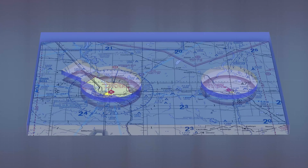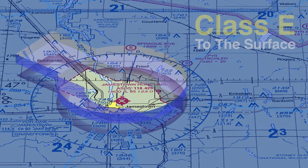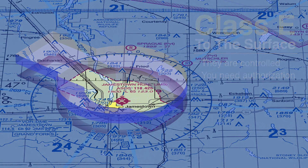In some places there are cylindrical cutouts of the class G. This brings us into a different airspace: class E to the surface. Don't be fooled by these small airports — they are controlled airspace, and unlike class G, you do need authorization to fly in them.